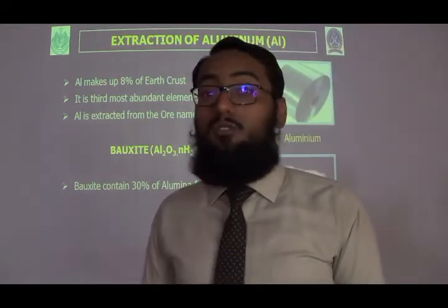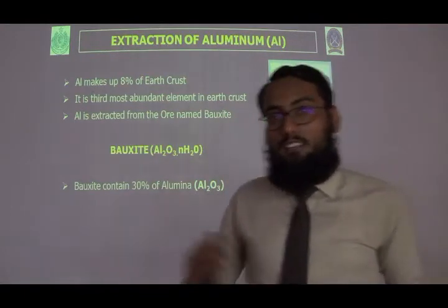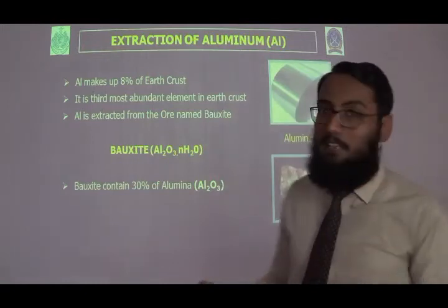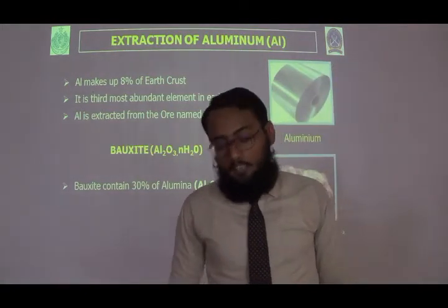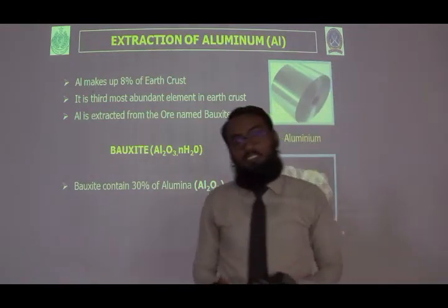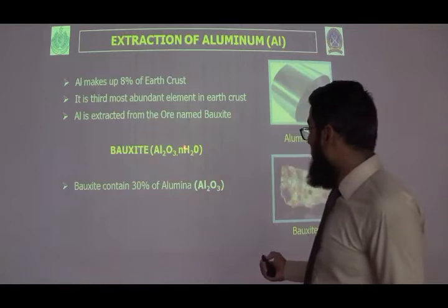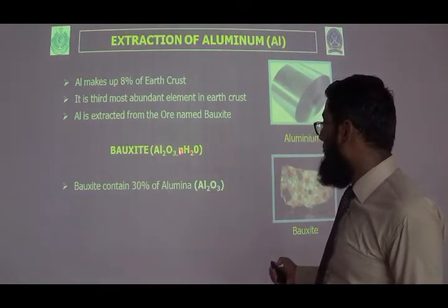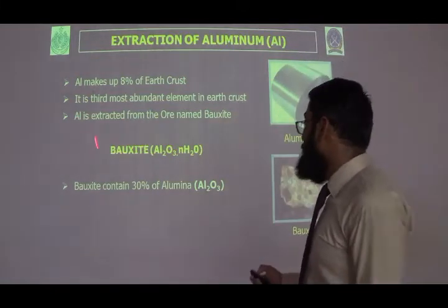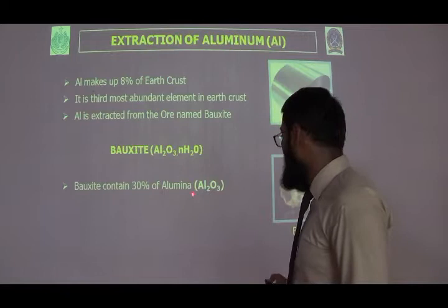Aluminium is extracted from the ore known as bauxite. The formula of bauxite is Al₂O₃·nH₂O — that is, aluminium oxide with some water molecules, where n can be 1, 2, or 3. We use bauxite because it contains about 30% aluminium oxide, which is why it is the preferred ore for aluminium extraction.